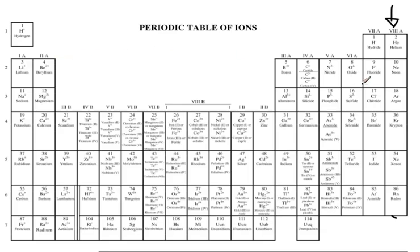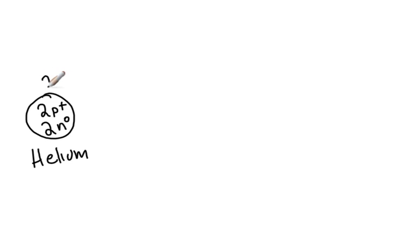We can look at the example of helium. Helium is element 2 and it's the first of our noble gases. Let's draw the nucleus here. The helium atom nucleus has 2 protons and 2 neutrons. Because it has 2 protons and it's a neutral species, we know that it's going to have 2 electrons. Those 2 electrons are going to be in the first energy level, and that first energy level can only hold 2 electrons.